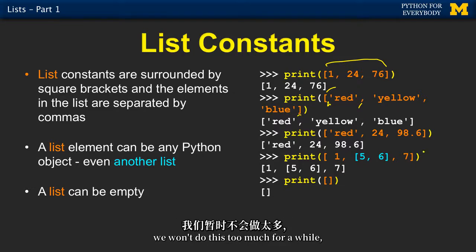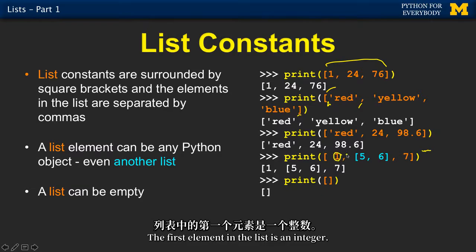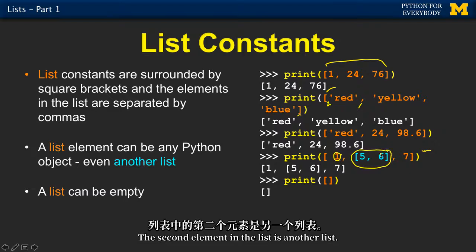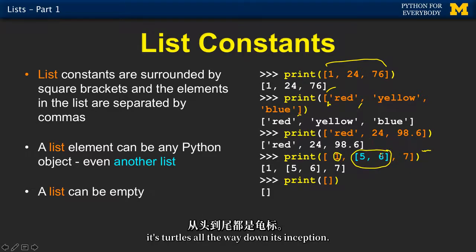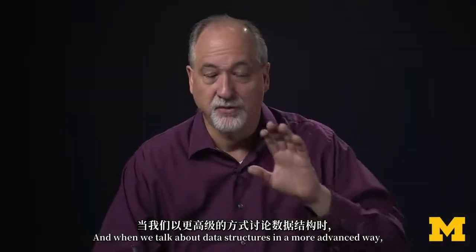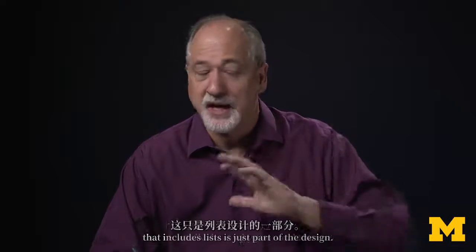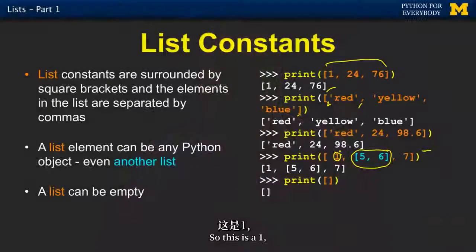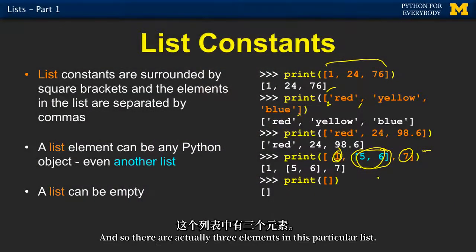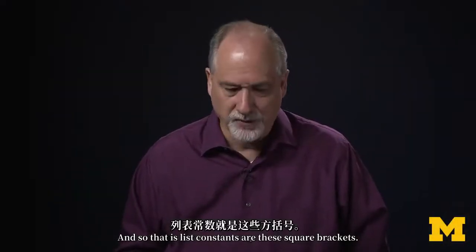You don't even have to stop there — this is a three-element list where the first element is an integer, the second element is another list. It's lists within lists — it's turtles all the way down, it's inception. When we talk about data structures in a more advanced way, having a list that includes another list or a dictionary that includes lists is just part of the design. There are actually three elements in that particular list, and you can also have an empty list.